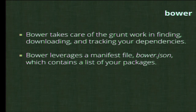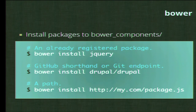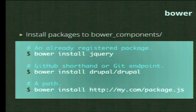Bower takes care of the grunt work — no pun intended — in finding, downloading, and tracking your dependencies. Bower leverages a manifest file called bower.json which contains a list of your packages. To install a new package, you just do 'bower install jquery' and boom — you have jQuery as a declared dependency you can manage and update through Bower. You can also get GitHub projects, a Git endpoint — for example, you could get the direct clone of Drupal core from GitHub and declare that as a dependency. You can also use a path to include a local framework as a package.